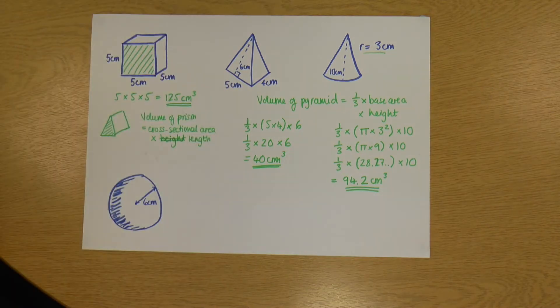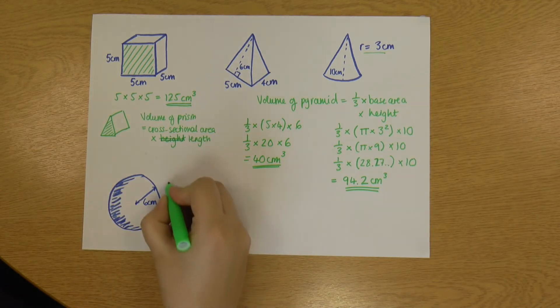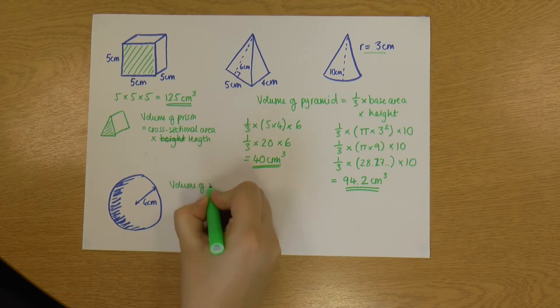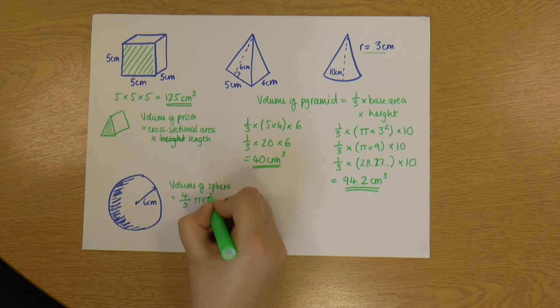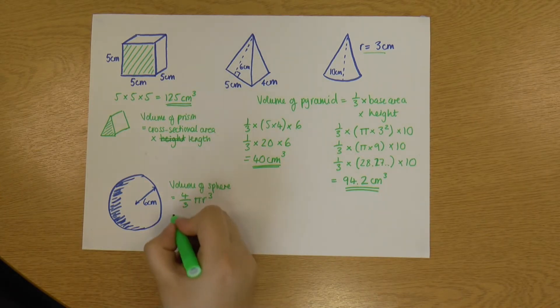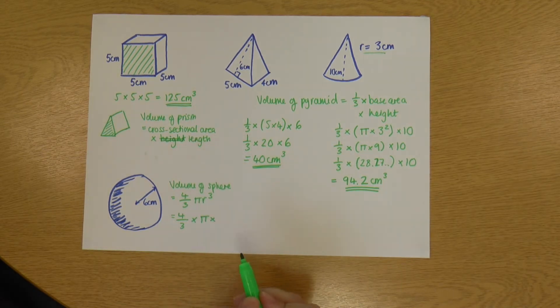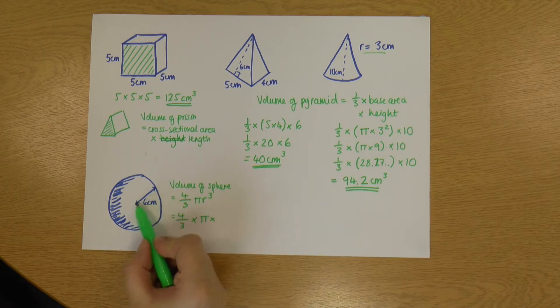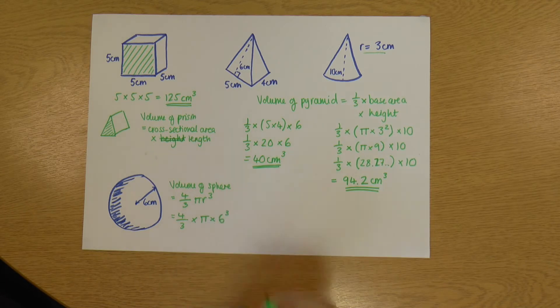Okay. Now our last shape is this sphere down here. So the volume of a sphere is 4/3 pi r cubed. So that means 4/3 times pi times r cubed, where r is still my radius. So my radius of a sphere works exactly the same as my circle radius. So my radius is 6. So that's 6 cubed.